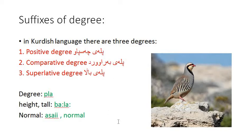In Kurdish language there are three degrees, just like in almost every language. In some languages there is also a comparative superlative or absolute superlative, but in most languages there are these three types of degrees of adjectives. Using English terminology for now — positive degree, comparative degree, and superlative degree — in Kurdish we use slightly different terminology, which I'll explain in a moment.